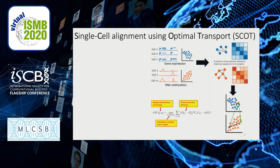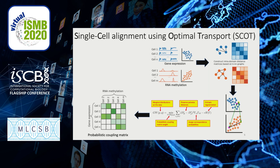Inside our optimization problem, we have a few terms. The first is a cost function that tells us we want to preserve pairwise distances — specifically, how the distance between points i and k in the first domain differs from the distances between points j and l in the second domain. We weight that by correspondence probabilities to tell us if we should transport point i to j, and likewise k to l. We also add an entropy term for regularization to make the computations more efficient. From this, we end up with a probabilistic coupling matrix where entry ij tells us how cell i should be related to cell j. We then use a weighted average based on this coupling matrix to project one dataset on top of the other.